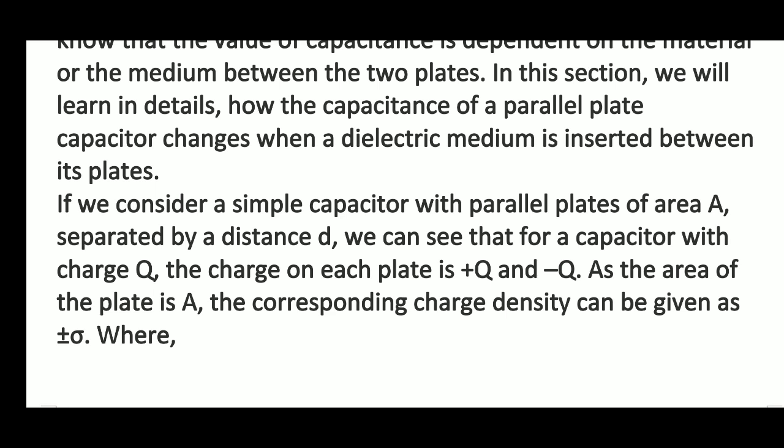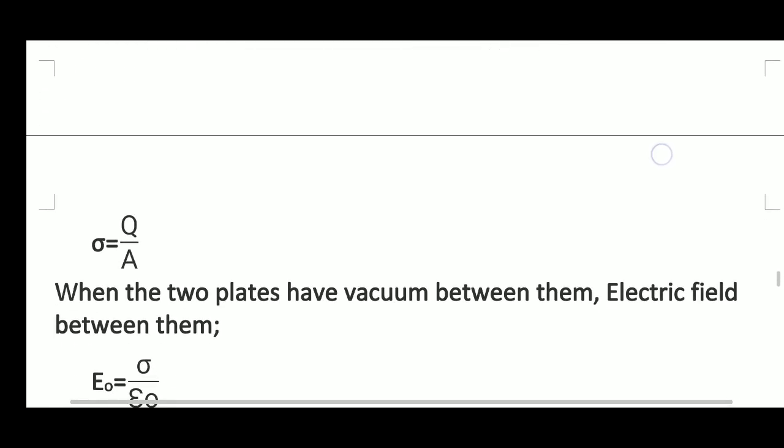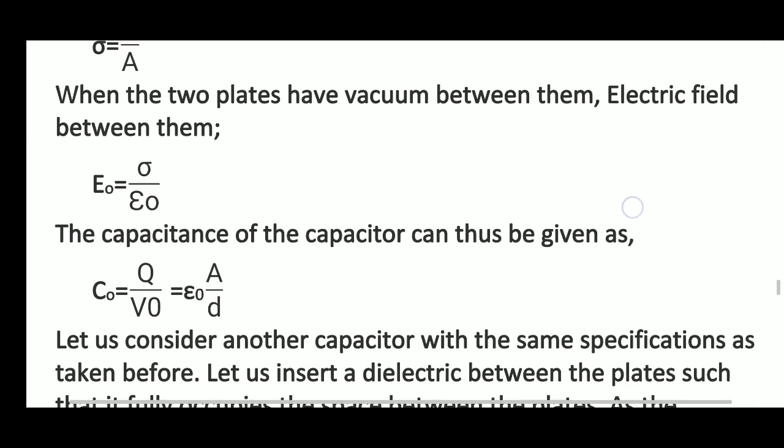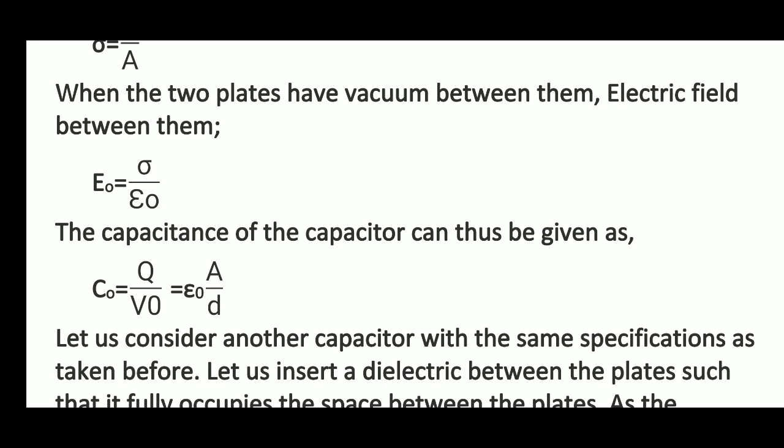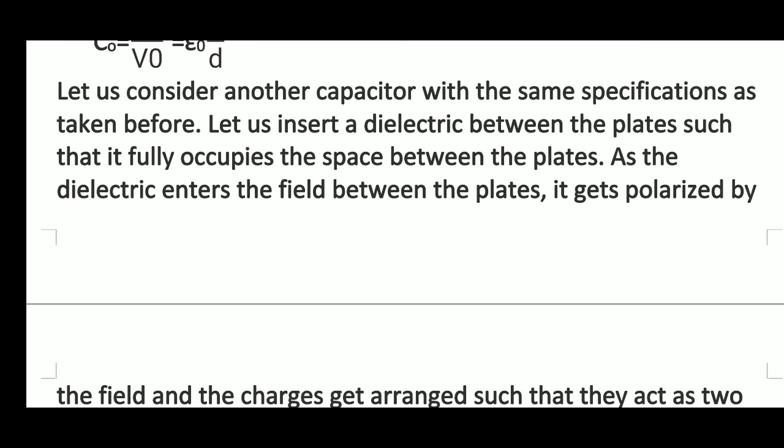Consider a simple capacitor with parallel plates of area A separated by a distance D. For a capacitor with charge plus q and minus q on each plate, the area of the plate is A, so the corresponding charge density is plus or minus sigma, where sigma equals q upon A. When the two plates have vacuum between them, the electric field between them is E nought equals sigma upon epsilon nought, and the capacitance is C nought equals q upon V nought, that is epsilon nought A by D.